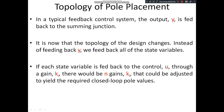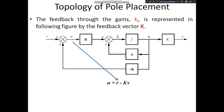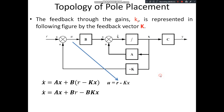If each state variable is fed back to the control U through a gain K_i, there would be N gains K_i that could be adjusted to yield the required closed-loop pole values. The feedback through the gains K_i is represented by a feedback vector K, so that U = R - KX. The system equation X-dot = AX + BU then becomes X-dot = AX + B(R - KX), which simplifies to X-dot = (A - BK)X + BR, and Y = CX.